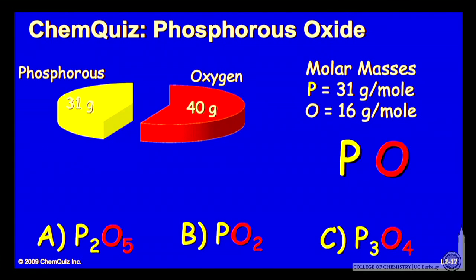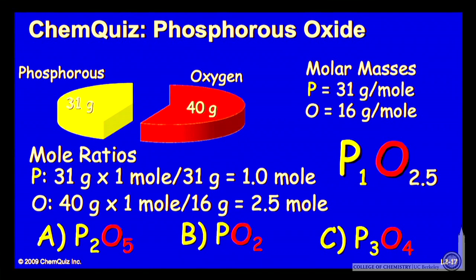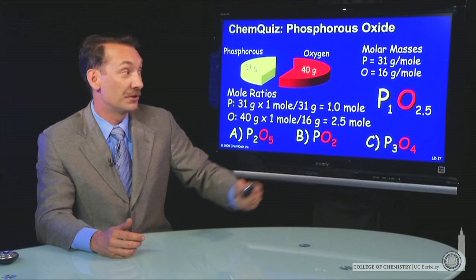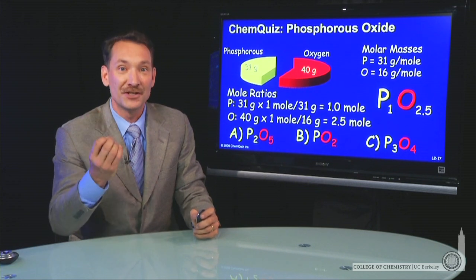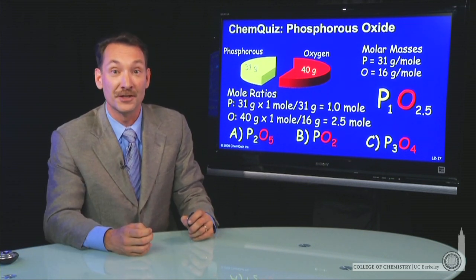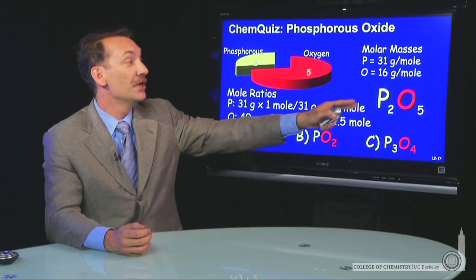We'll need the relative molar masses. 31 grams of phosphorus is one mole of phosphorus, and we denote that with a subscript 1. 40 grams of oxygen is 2 and a half moles of oxygen. We could denote that with the subscript 2.5, but we like to have integer subscripts in our molecular formulas. So let's multiply through by 2 and use the mole ratios 2 to 5.